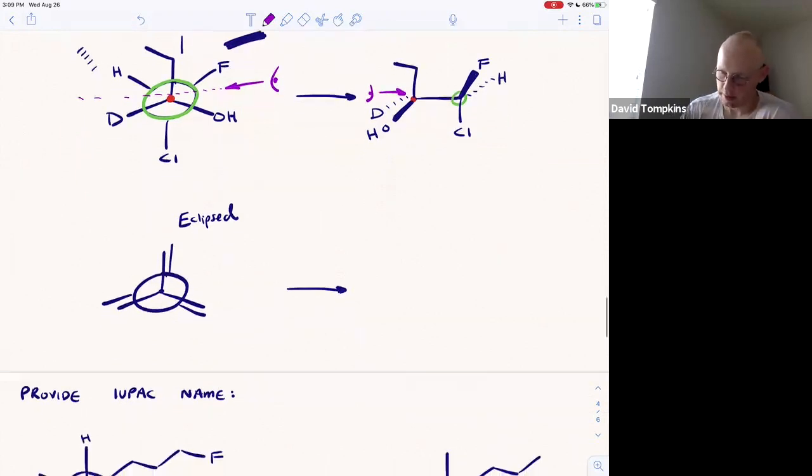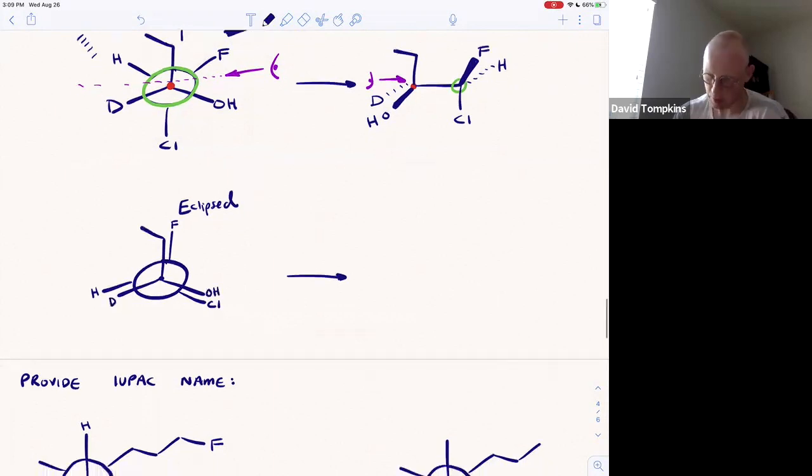If you take your eyeball and look directly at the red carbon, it would produce this image. One more example with the eclipsed conformation. We'll use the same substituents as before. If the eyeball is looking from this side, which is optional—you can look from either side—you should pick one and be consistent in your method.